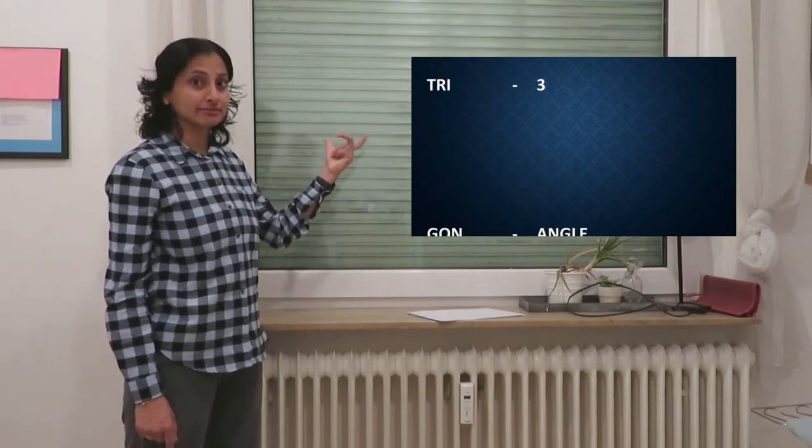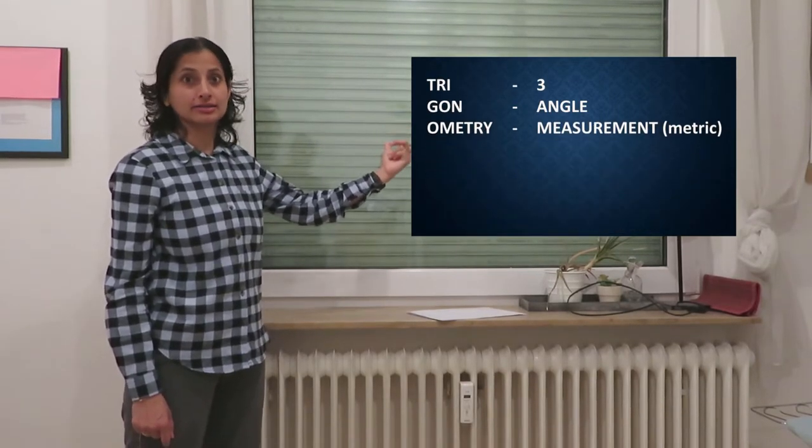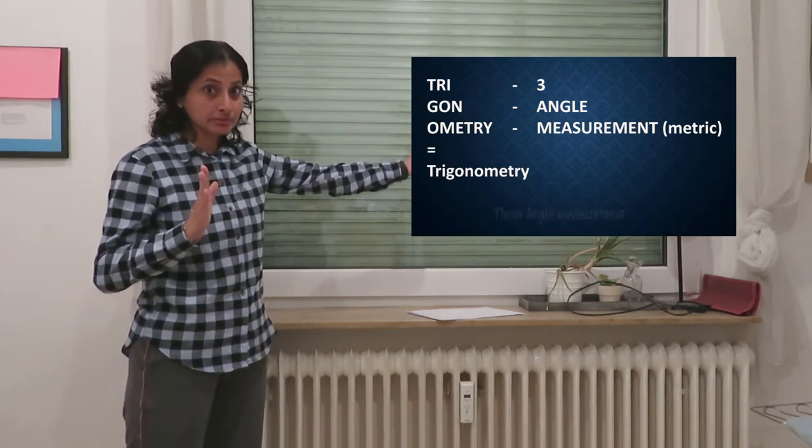Trine means three, gono means angles, and ometry means metric. Metric means measurement.